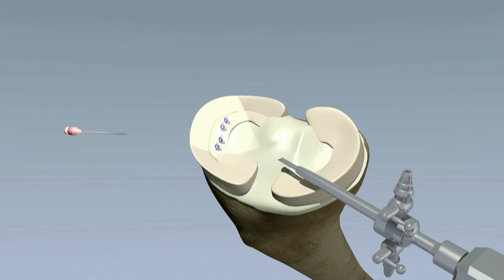While stitches might hold the torn edges in place, the edges will never heal back together. Only the outer edge of the meniscus has enough blood supply for a successful repair.